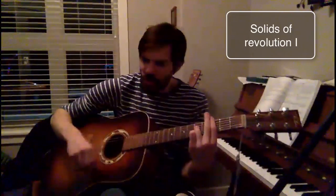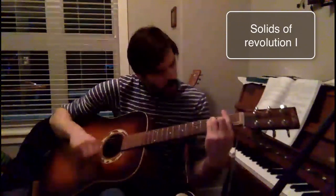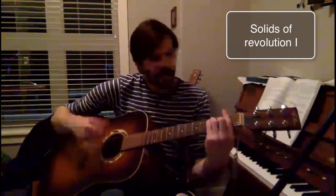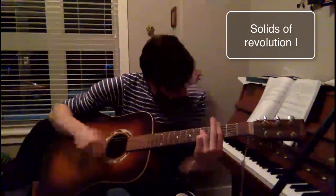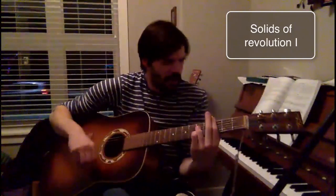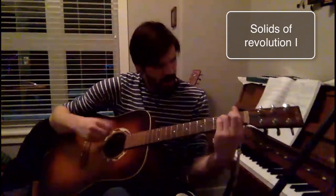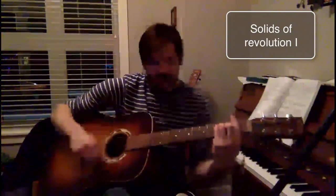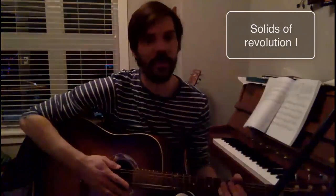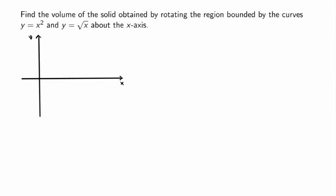Volumes and solids of revolution — this is what we're going to see today: how to calculate the volume of solids of revolution. So what are solids of revolution? These are solids obtained by rotating a region in the xy-plane about an axis. We're going to focus on either horizontal or vertical axes. Our goal is to calculate the volume of solids of revolution.